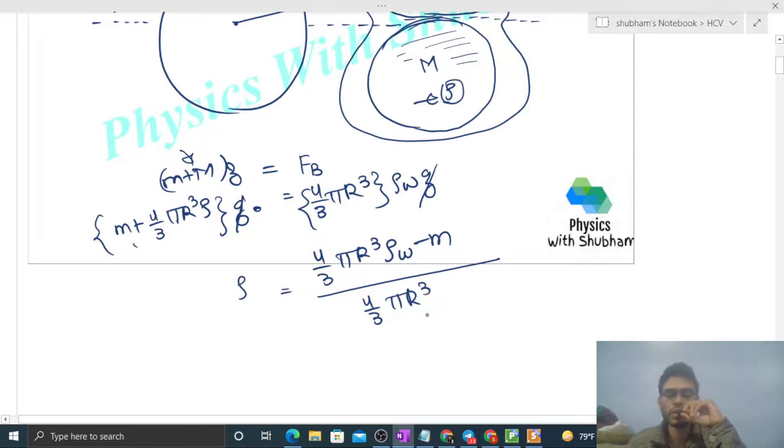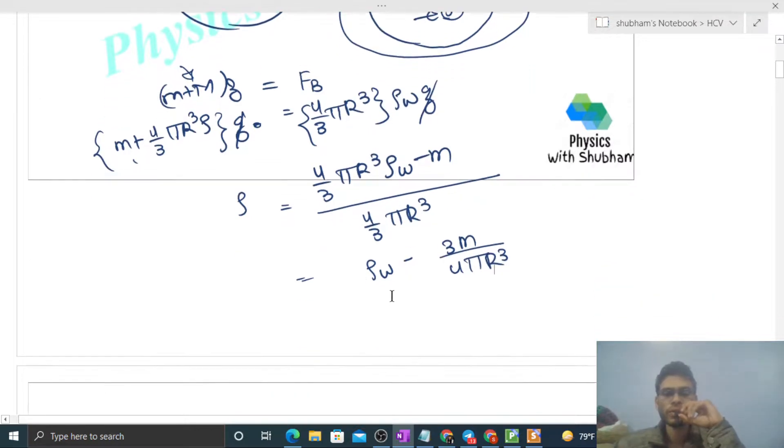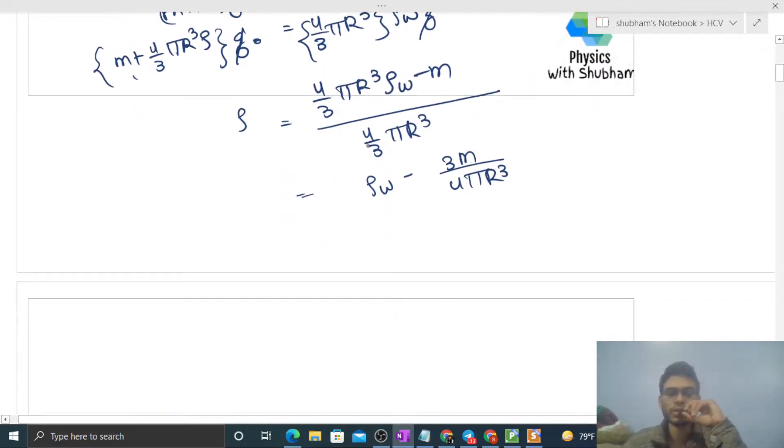Let's simplify this a bit. So you can see 4 by 3 pi R cube cancels out, so density of water minus 3m divided by 4 pi R cube. And what we have to find out is specific gravity. So specific gravity is nothing but density upon density of water. So we can divide by density of water, so it will be 1 minus 3m divided by 4 pi R cube into density of water.